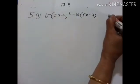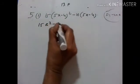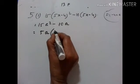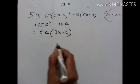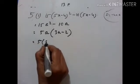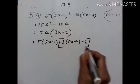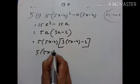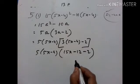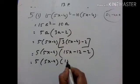Let 5X minus 4 equal A. So we have 15A² minus 10A. Here 5A is common, giving 3A minus 2. Now we substitute A with 5X minus 4: 5 into 5X minus 4 gives 15X minus 12 minus 2, and minus 12 minus 2 equals minus 14. So the result is 15X minus 14.